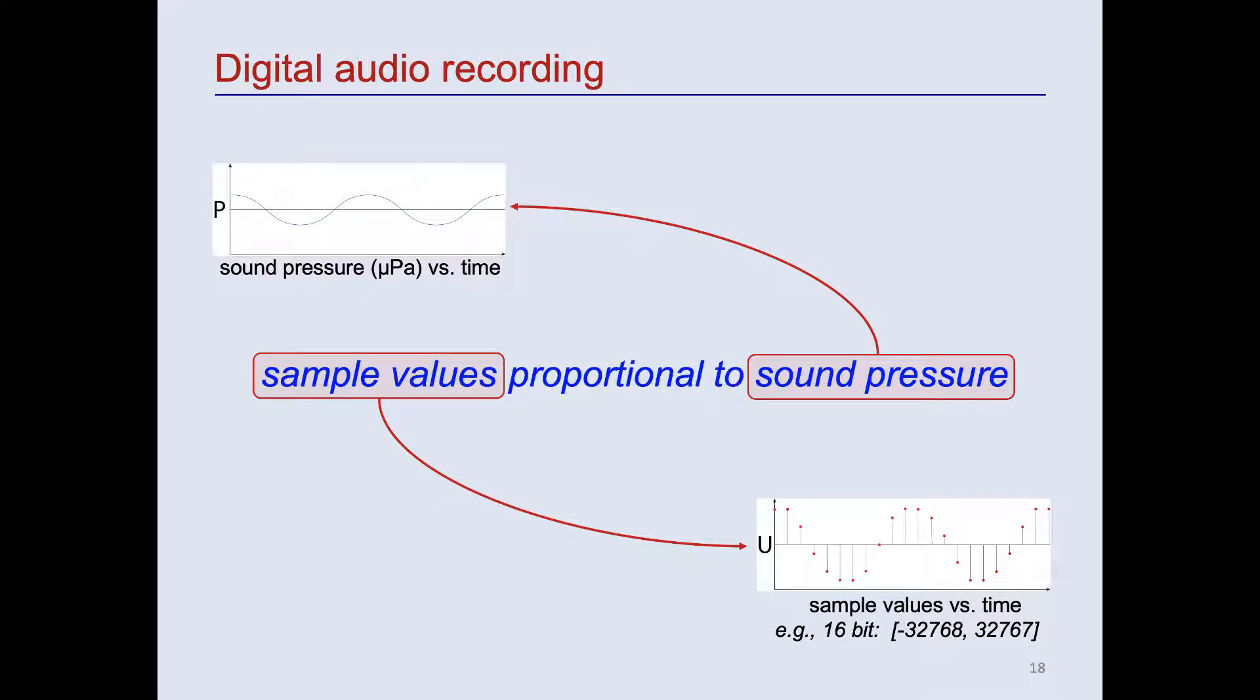The sample values are proportional to the original sound pressure. Depending on the situation, we may or may not care what the proportionality constant is that relates the sample values to sound pressure. In many animal bioacoustic studies, we typically don't know it. Depending on how the recordings were made, it may or may not be possible to figure out what the proportionality constant is after the recording was made.